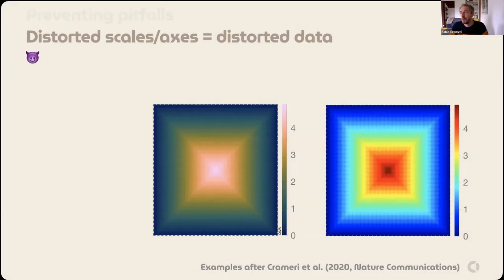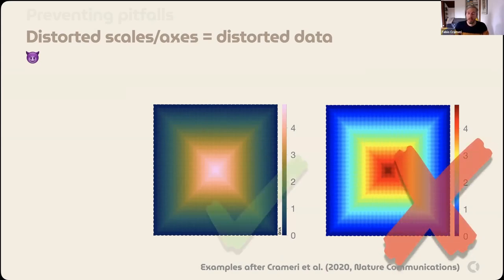However, we often do something similar in science. You all know the rainbow color map. On the left-hand side, you see a scientific version of the data — basically a gradual increase toward the center with some fluctuations. If you represent it with a faulty scale like the rainbow on the right-hand side, you see all kinds of visual artifacts and the entire data set is misrepresented. So this shouldn't be used.